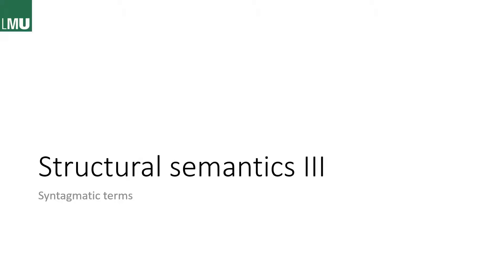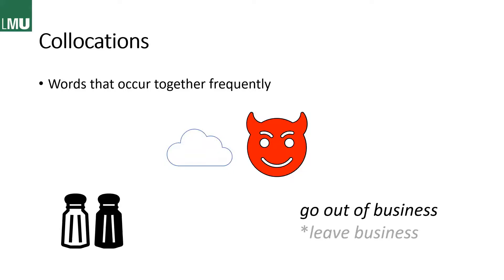Still in structural semantics, we now move to syntagmatic terms. The first thing to address is collocations — words that occur together frequently, and a native speaker would notice if you mix them up. For example, 'powerful arms' sounds strange. Common collocations include 'heaven and hell,' 'salt and pepper,' and when a shop closes they 'go out of business' — you cannot say they 'leave business,' as the correct collocation is 'go out of business.'